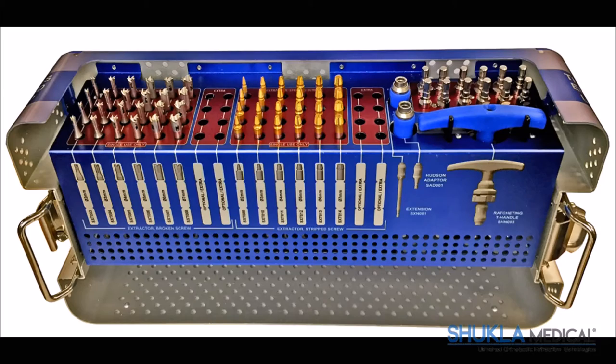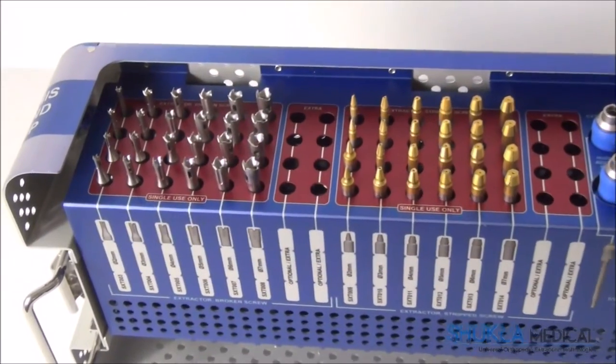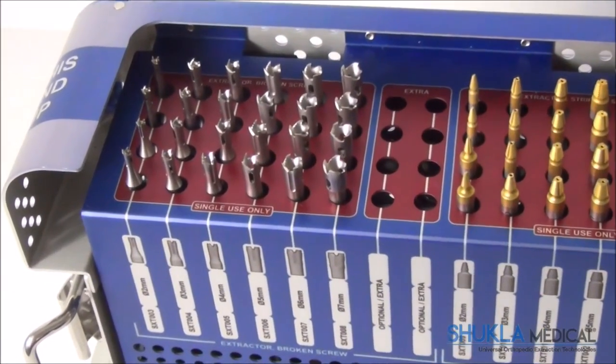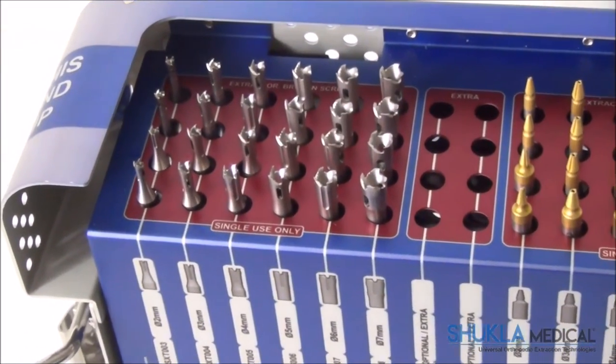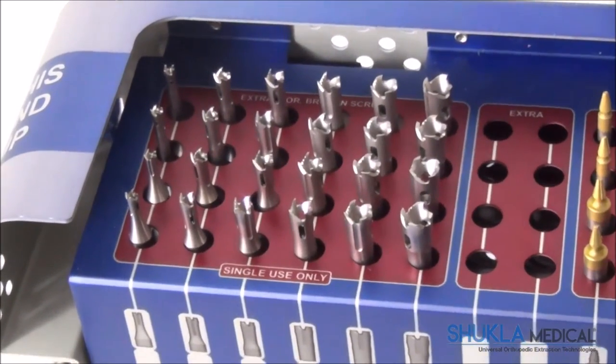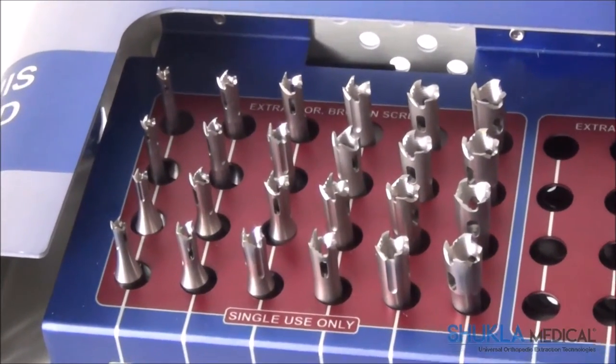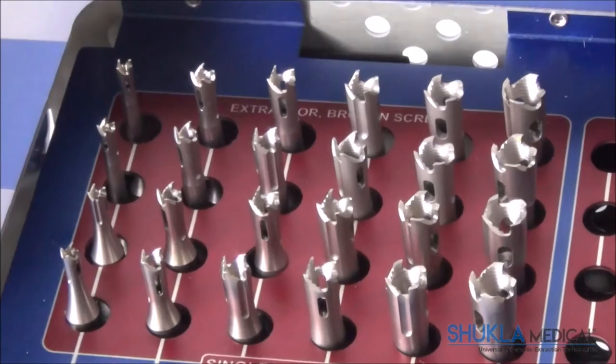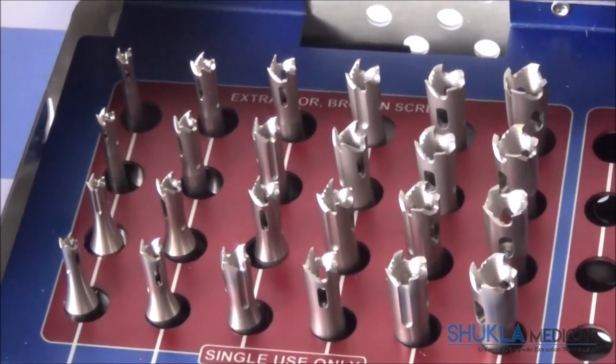The broken extractors sit in the tray to the left, labeled from the smallest size 2 mm up to the largest 7 mm. Since each extractor is capable of removing slightly smaller and larger size screws, the range of usage can actually be extended up to 8 mm in size.